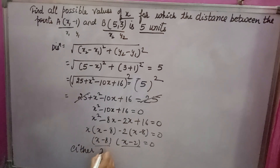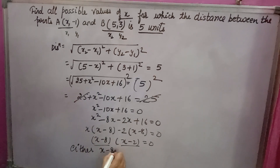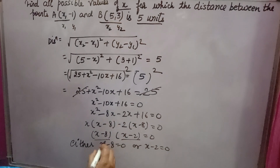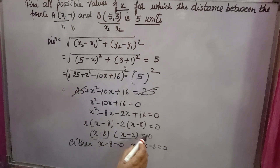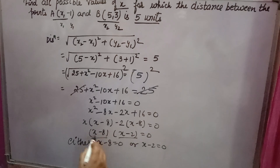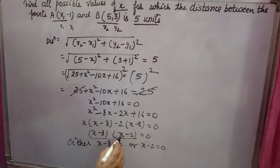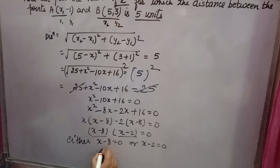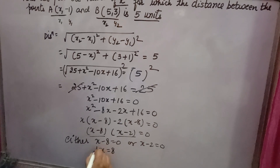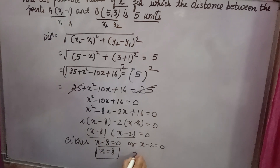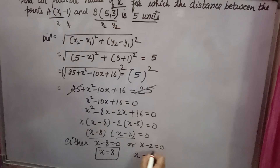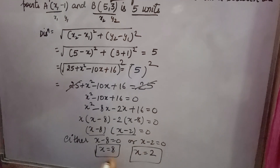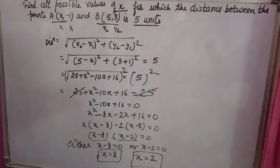Either x minus 8 equal to 0, or x minus 2 equal to 0. Because the product of two numbers is 0 when one number is 0. So either x minus 8 equal to 0, or x minus 2 equal to 0. This gives x equal to 8 and x equal to 2. So two values are there: x is equal to 8 and x is equal to 2.